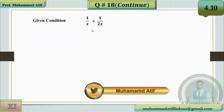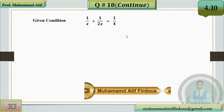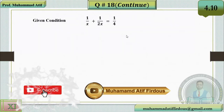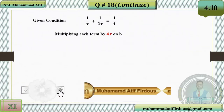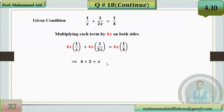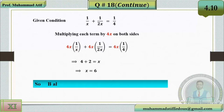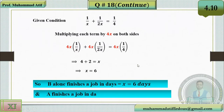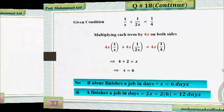Multiplying each term by the LCM 4x: 4 + 2 = x, so x = 6. B alone finishes the job in 6 days, and A finishes in 2x = 12 days.